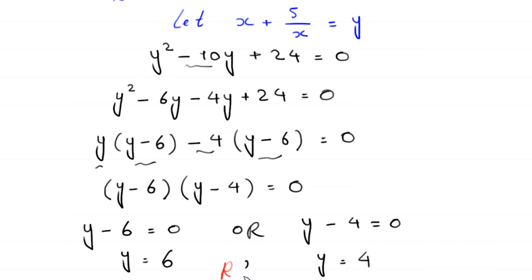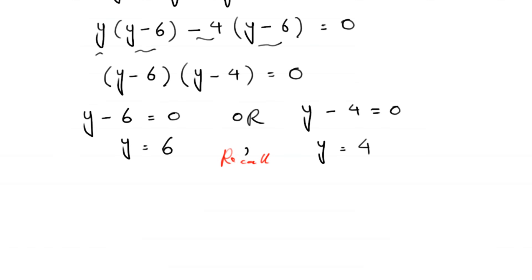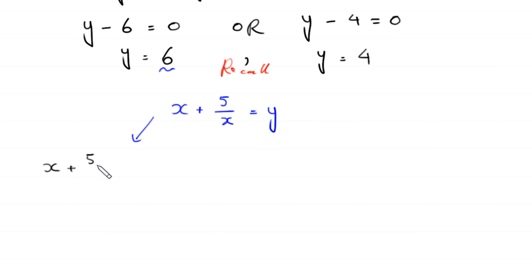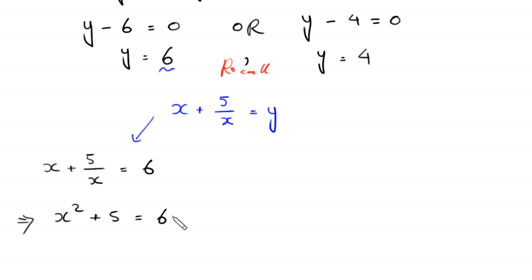Recall that x plus 5 over x equals y. When y equals 6, the equation becomes x plus 5 over x equals 6. Multiplying both sides by x gives x squared plus 5 equals 6x. Moving 6x to the left-hand side gives x squared minus 6x plus 5 equals 0.